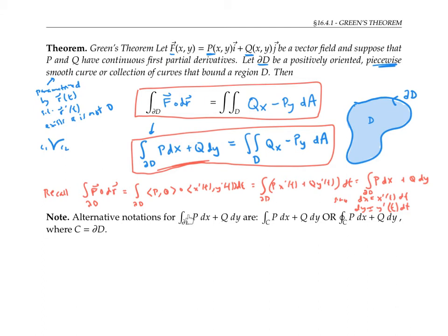There are a few common alternate notations for this expression with the boundary of D. Instead of the boundary of D, we can just write C, where we assume C is the positively oriented boundary of D. Sometimes we write this line integral with a circle around it to help remind us that we're taking the integral around a closed curve.